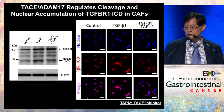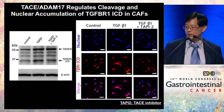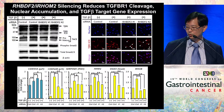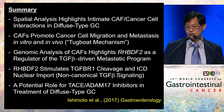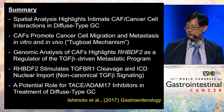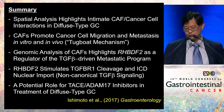This is very exciting because if CAFs use this alternative non-canonical pathway to trigger the pro-metastatic program, this highlights a totally new set of enzymes and genes that we can target. Inhibiting IROM2 can reduce this pro-metastatic program. To summarize: spatial analysis highlights CAF-cancer cell interactions in diffuse-type gastric cancer. CAFs promote cancer cell migration and metastasis. Genomic analysis highlights IROM2 as a regulator of TGF-beta-driven metastasis through non-canonical signaling, and highlights a potential role for a new class of medications previously used in autoimmune disease, potentially in diffuse-type gastric cancer.